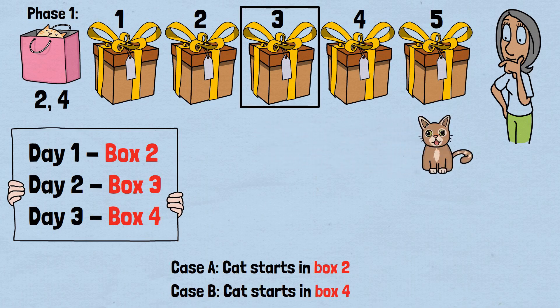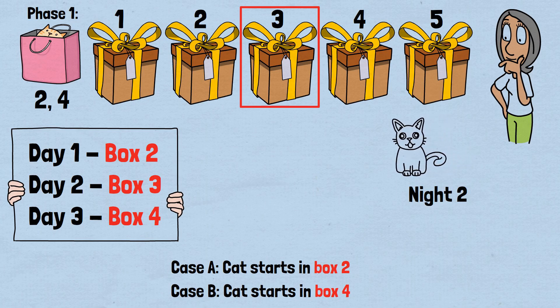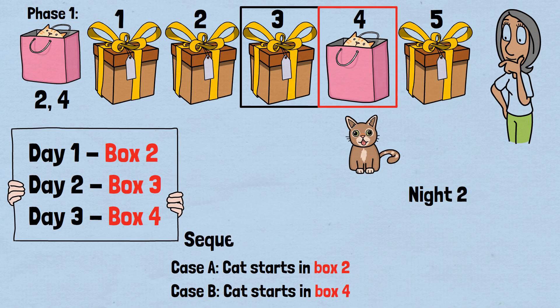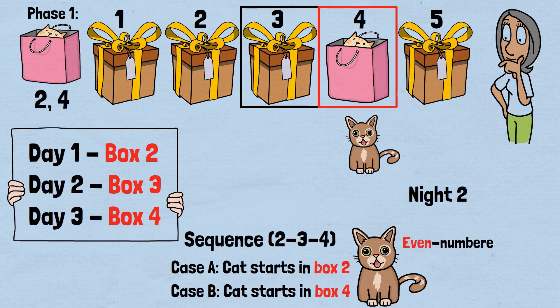If cat goes to box 5. Day 2: We search box 3. Cat is in box 5. Night 2: If cat was in box 5, cat moves from box 5 to box 4, because there is no other option. Day 3: We search box 4. We find the cat. This sequence, 2-3-4, is mathematically guaranteed to catch the cat if it starts in an even-numbered position within 3 days.